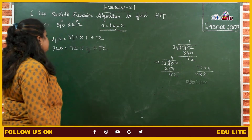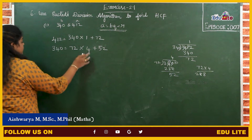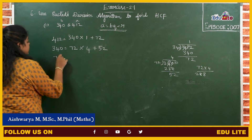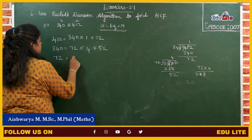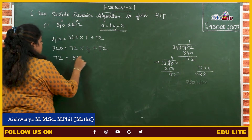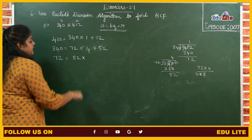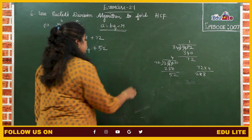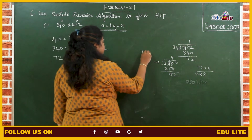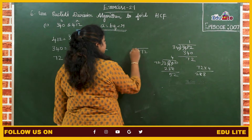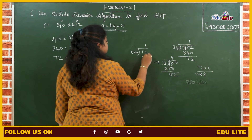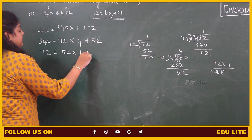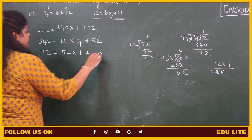Again the remainder is not 0, therefore we have to proceed. Now the dividend is 72 and 52 is the divisor. 72 divided by 52: 1 times, plus 20.